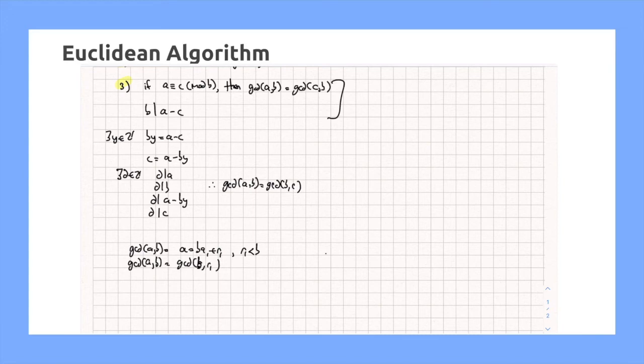Now, we can also rewrite this equation further into B equals R1 Q2 plus R2, where R2 is less than R1. And similarly, we get that GCD of B comma R1 is equal to the GCD of R1 comma R2.